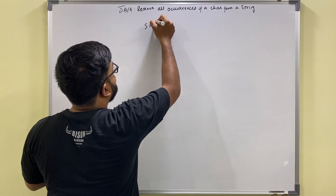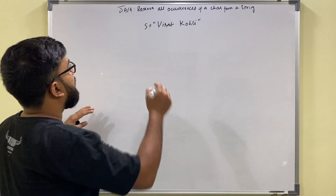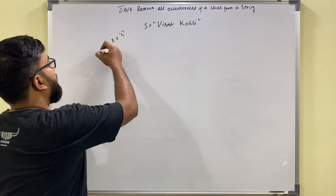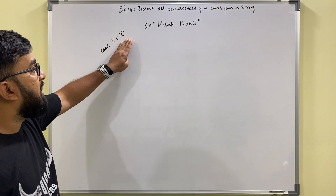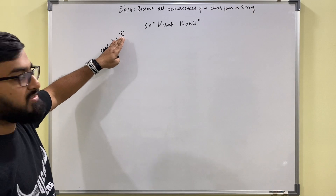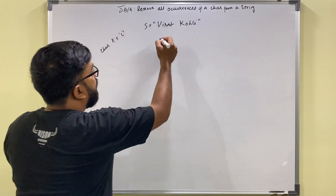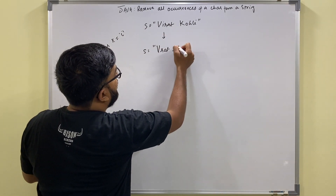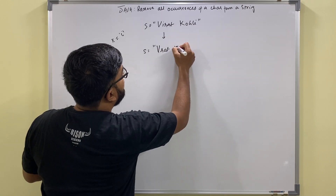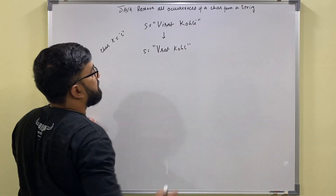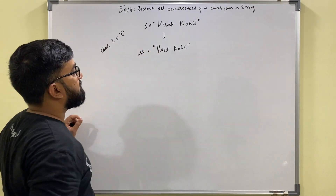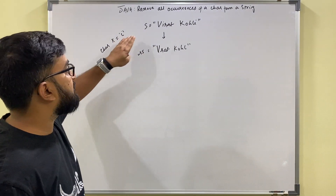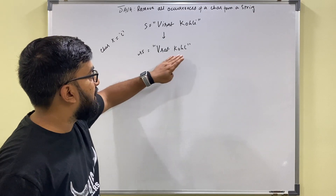So if I have a string S and I have to remove all occurrences of character X — for example, char X equal to lowercase 'i' — I have to remove all the occurrences of this character from the string. The expected result is a string with all 'i' characters removed, keeping all other characters including spaces. I am given a string, I am given a character, and I have to print the updated string.